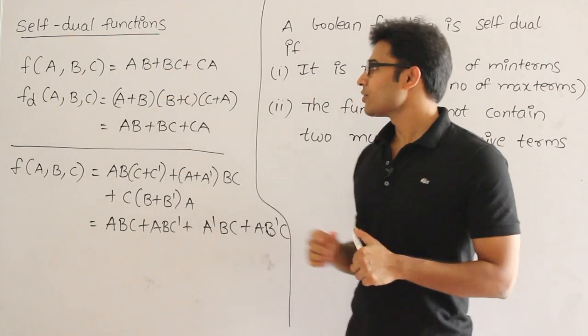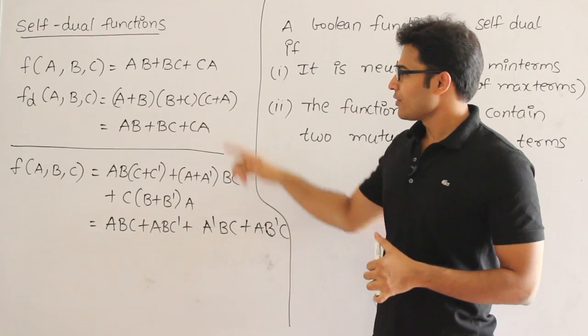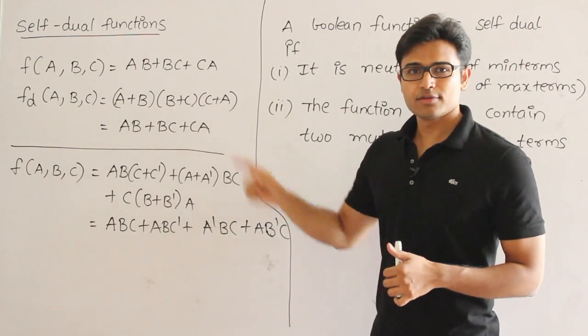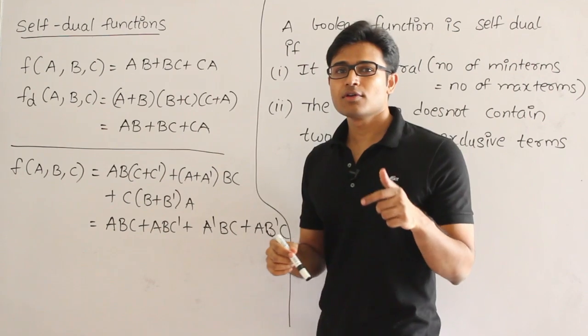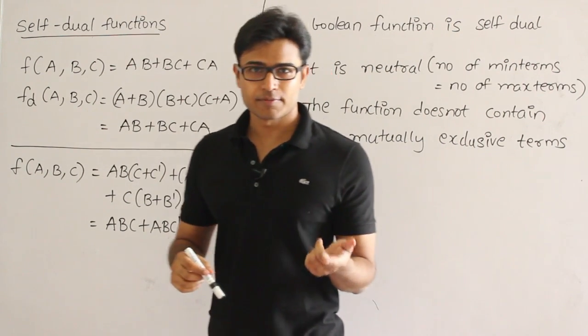Then I got this thing called as dual function. Now if you look at these two, f equals fd. So whenever a function is equal to its dual, then it is called self-dual.